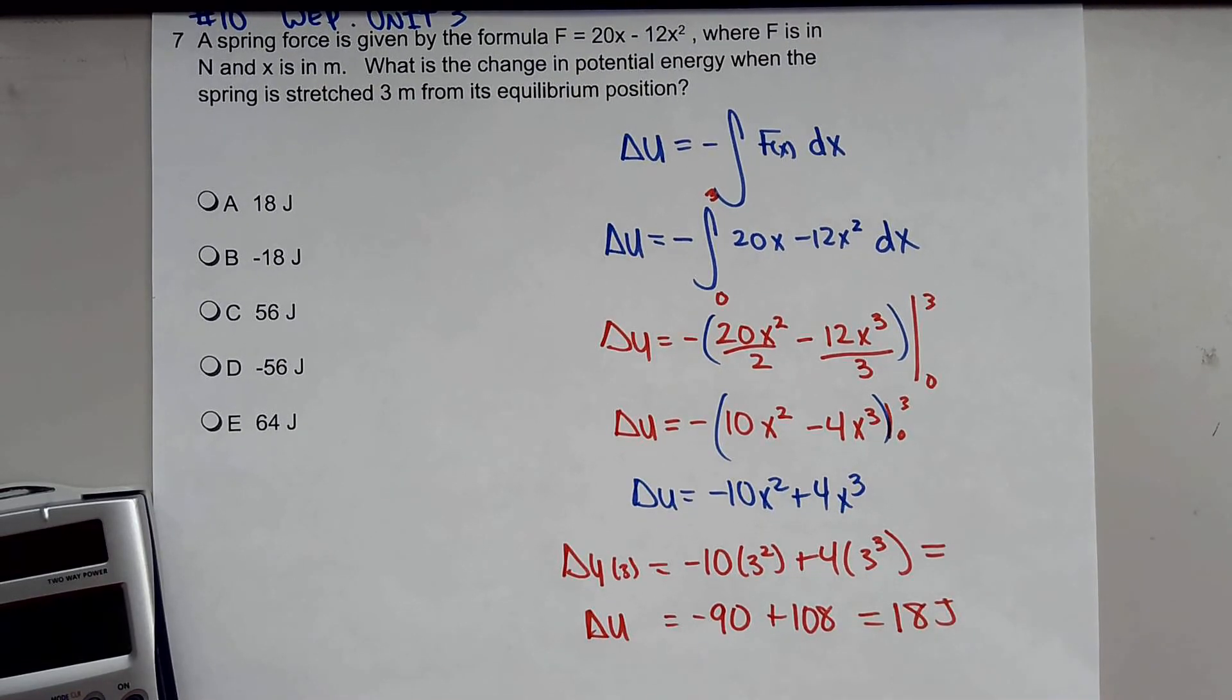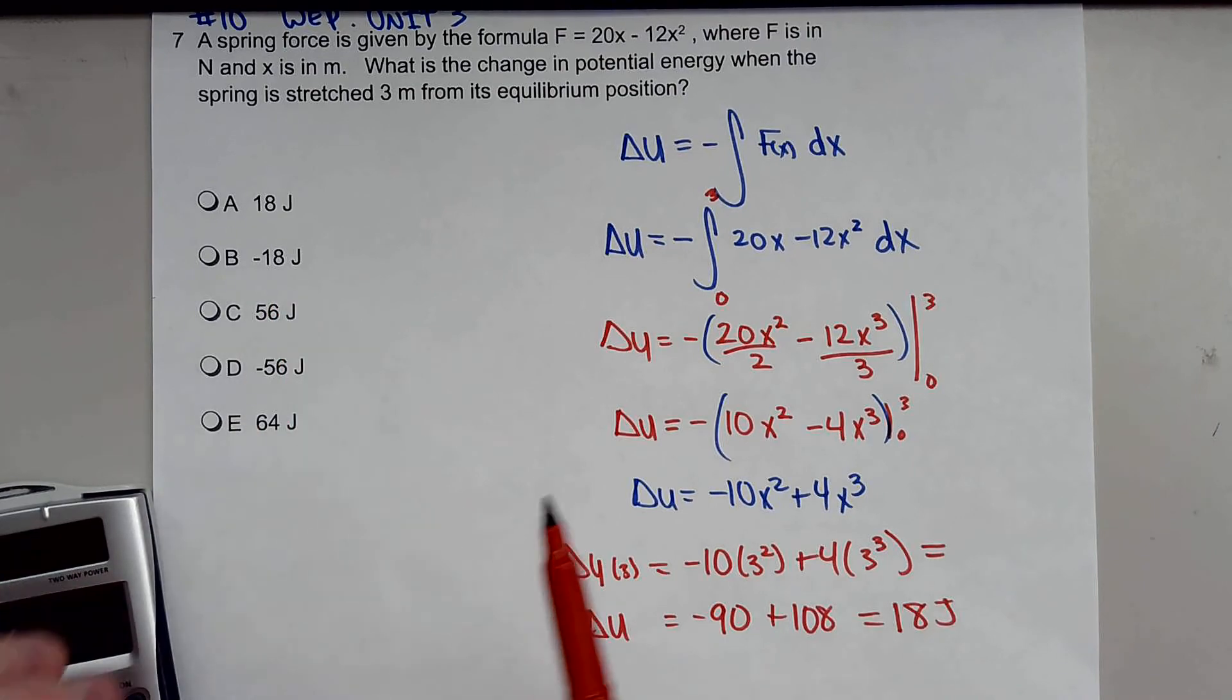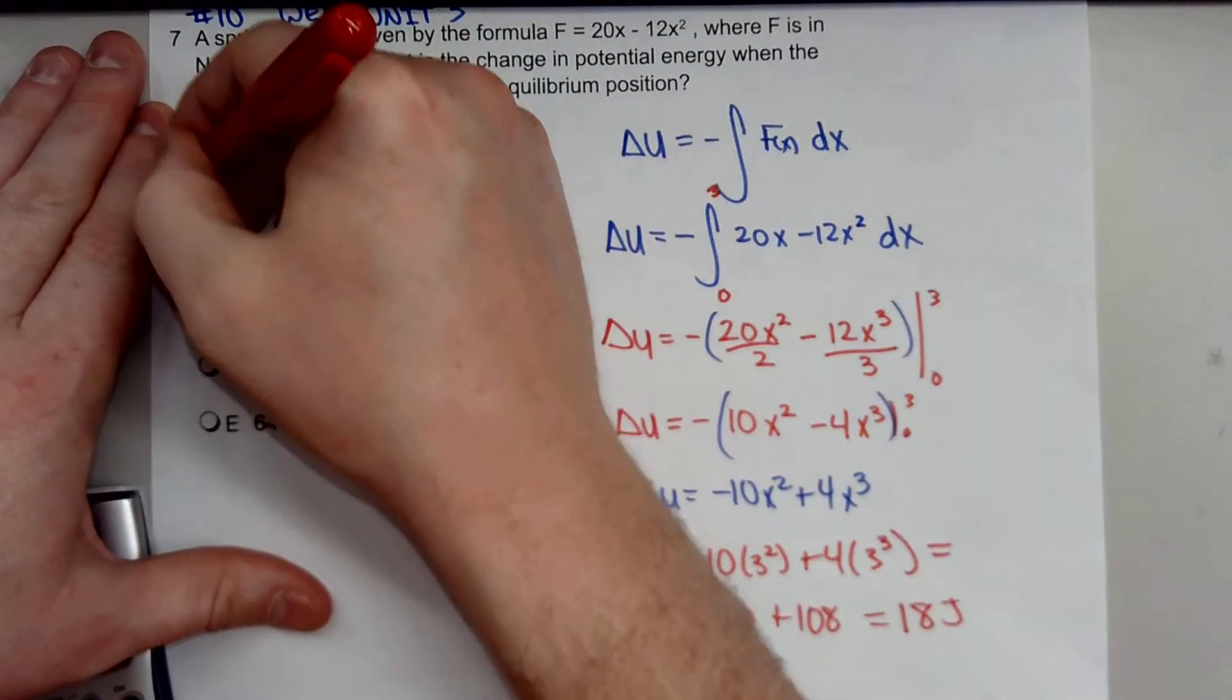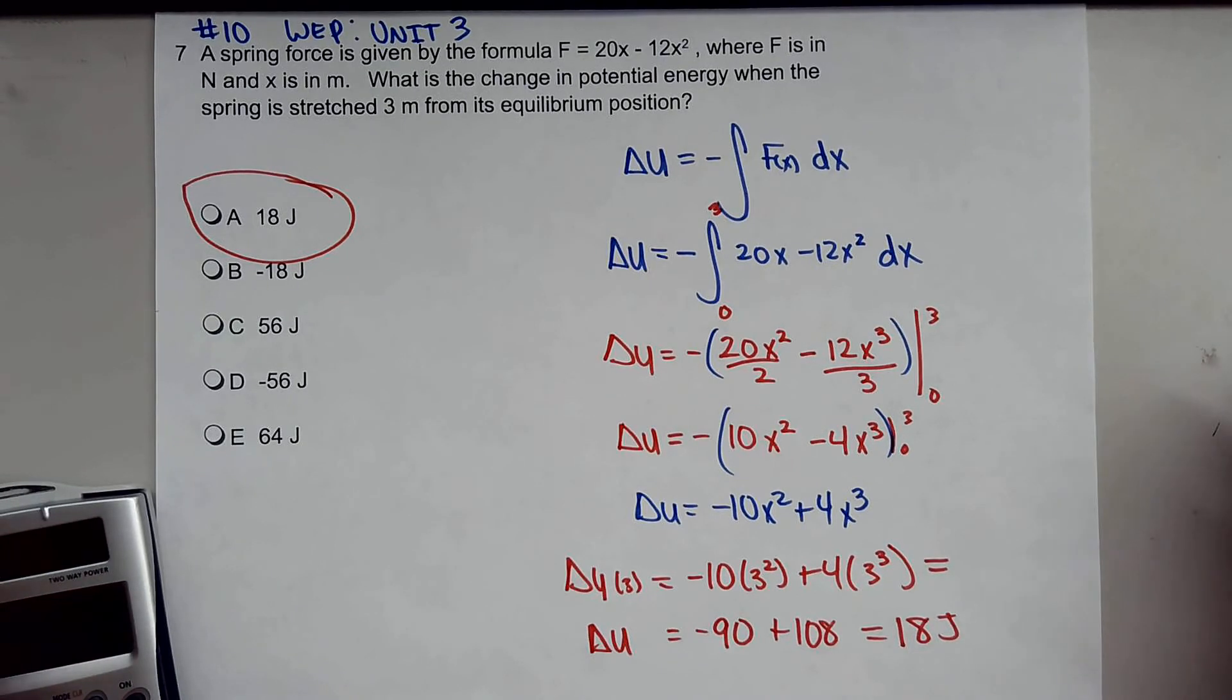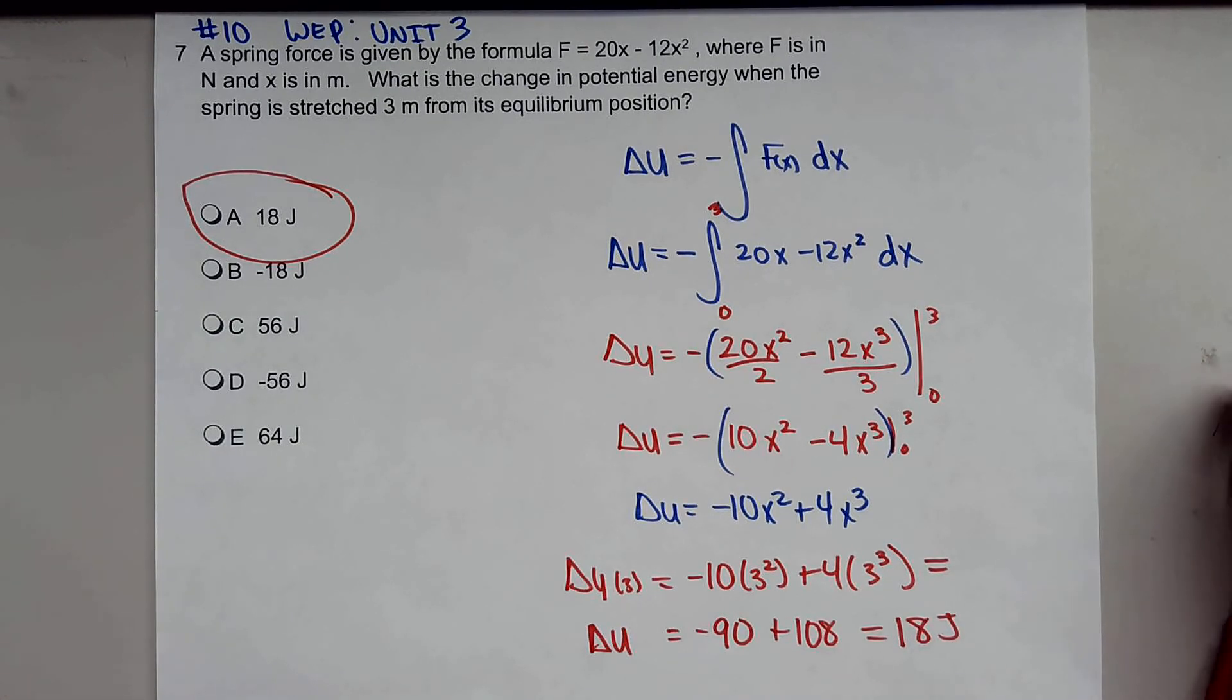Now it would be positive 18 joules. If you had these flipped, you would get the negative value of this. The correct answer for number 10 of the work, energy, power unit number 3 question is 18 joules of energy.